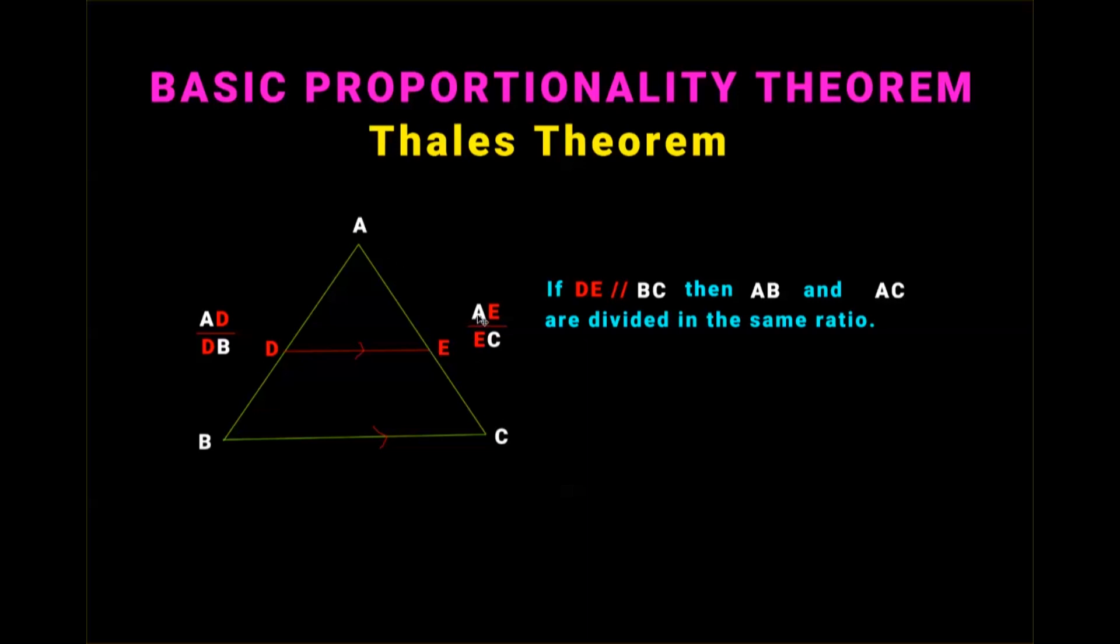When we say that AB and AC are divided in the same ratio, it means that these two ratios are equal. That means AD by DB is equal to AE by EC.